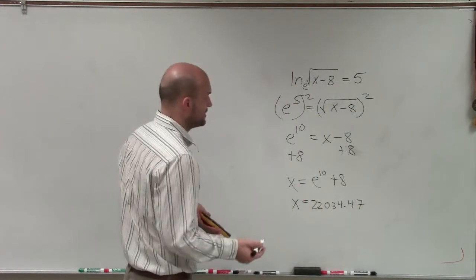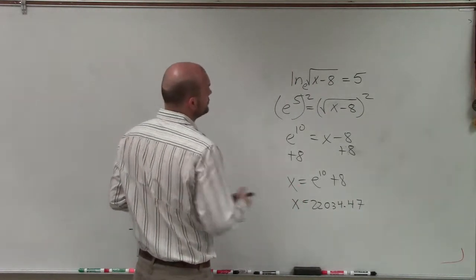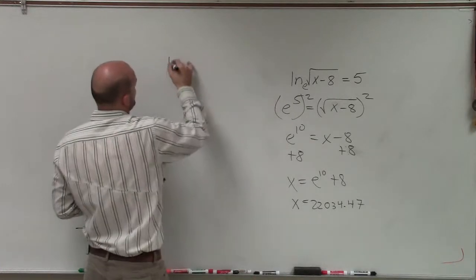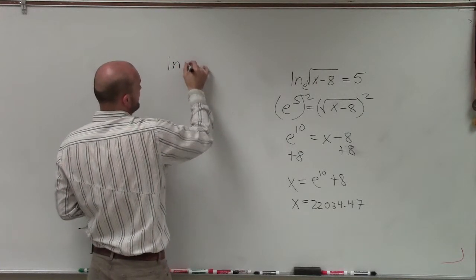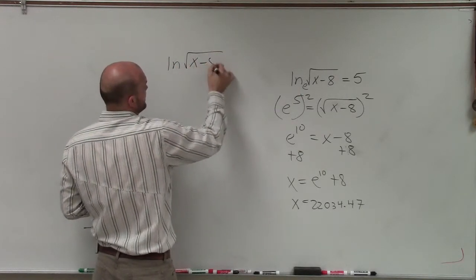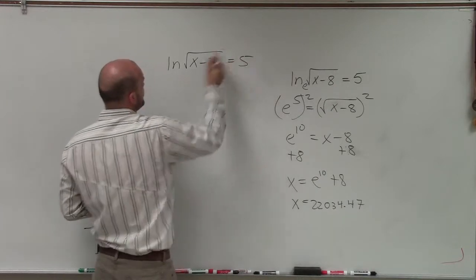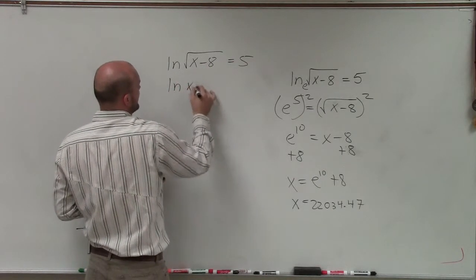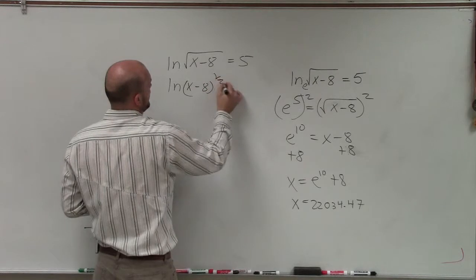Now, another way you could also do this is you could use your properties of logarithms. The square root can be rewritten as ln of x minus 8 to the 1 half power.